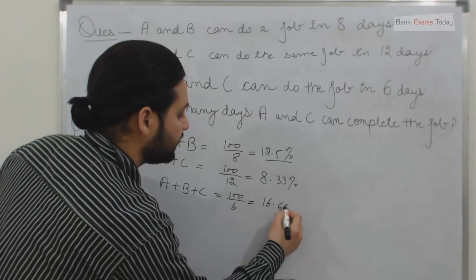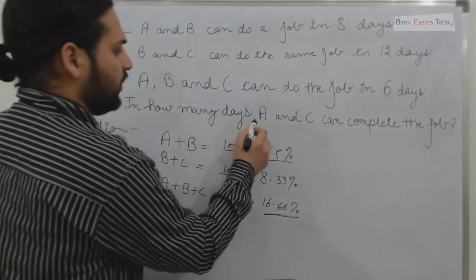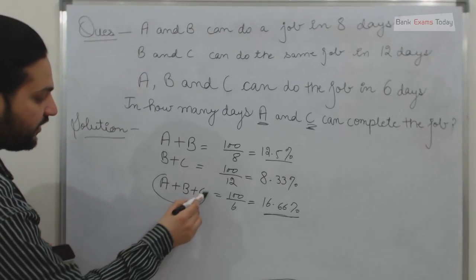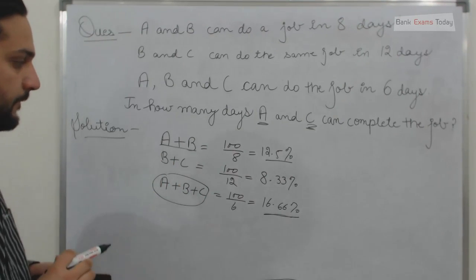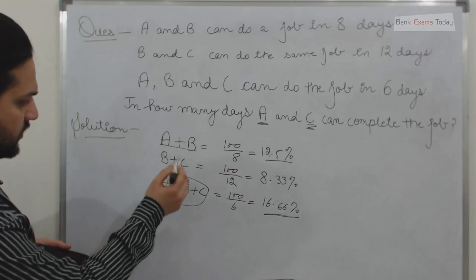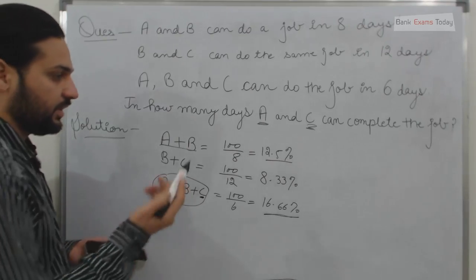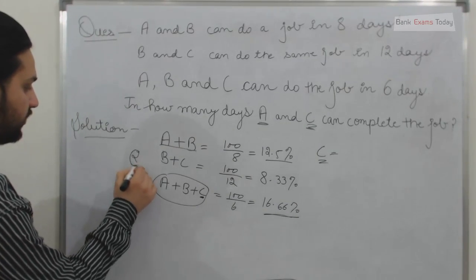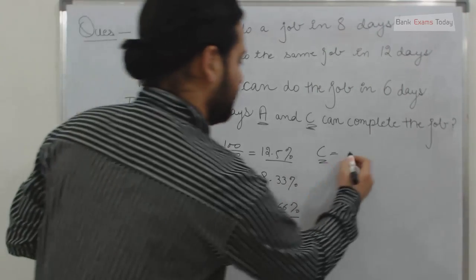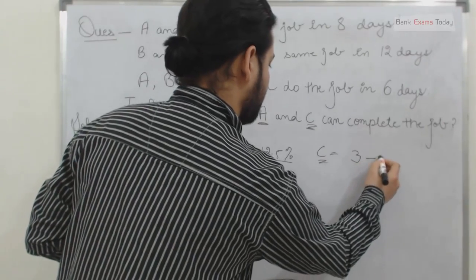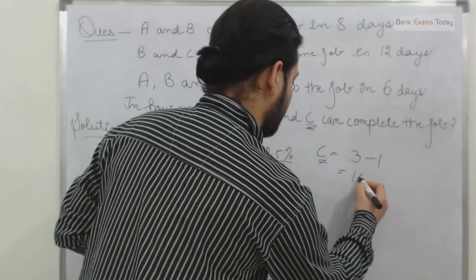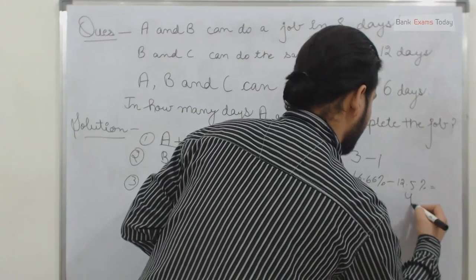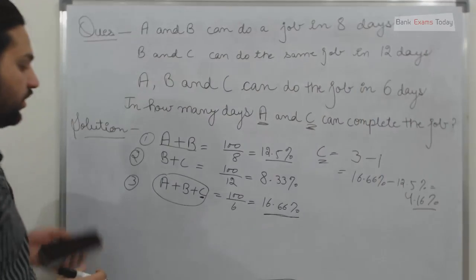We need to calculate the efficiency of A and C separately. The efficiency of C alone is obtained by deducting equation 1 (A+B) from equation 3 (A+B+C). So the efficiency of C equals 16.66 percent minus 12.5 percent, which gives 4.16 percent.